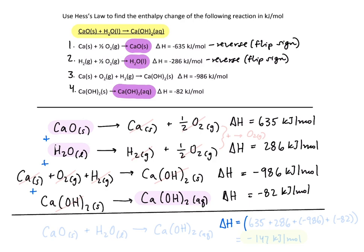So our enthalpy change is going to be equal to 635 plus 286 plus negative 986 plus negative 82 and now you need to grab your calculator and if you calculate it out we'll get negative 147 kilojoules per mole.